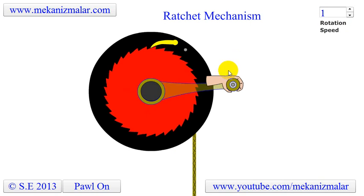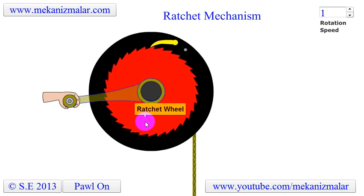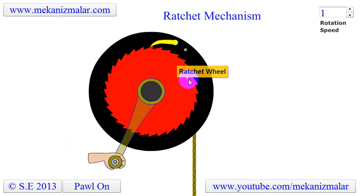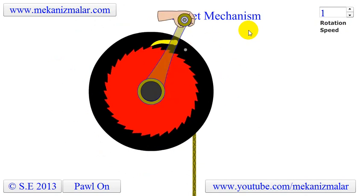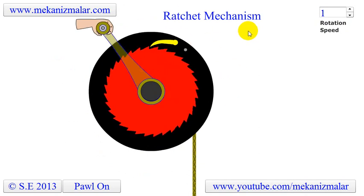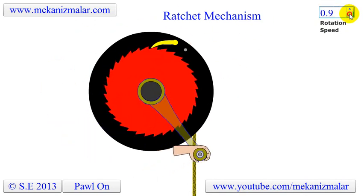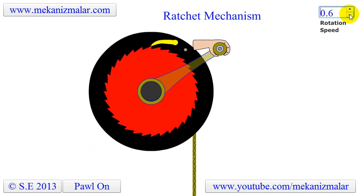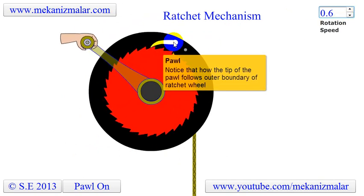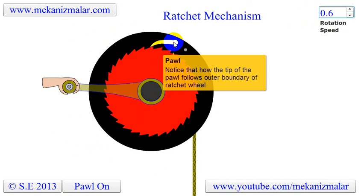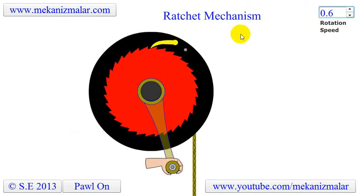In this video, the ratchet wheel is shown as a red disc with teeth. The teeth are uniform but asymmetrical, with each tooth having a shallow slope on one side and a much steeper slope on the other side. The pawl, shown in yellow, is free to rotate around a small shaft and can manually disengage from the ratchet if there is a need for it.